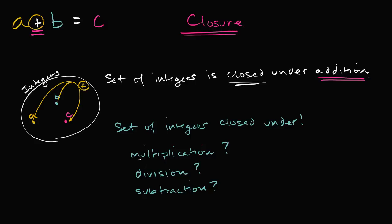Multiplication, if you take two integers and you were to multiply it, you actually will always get another integer. So the set of integers is closed under multiplication.